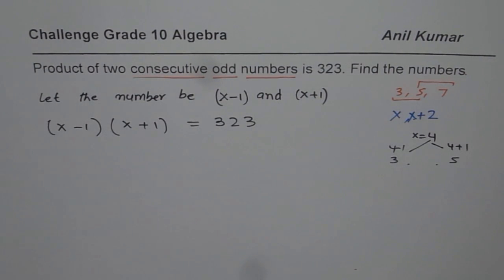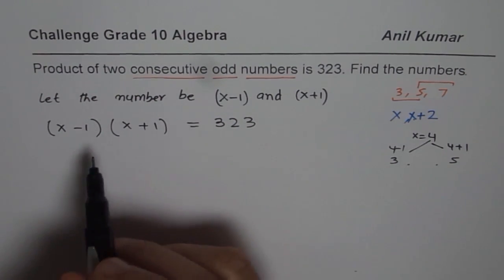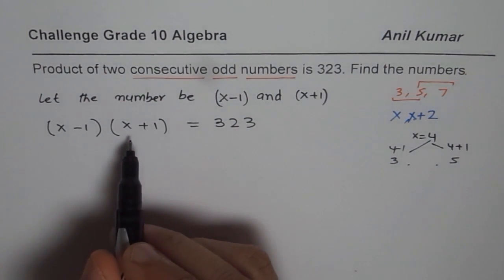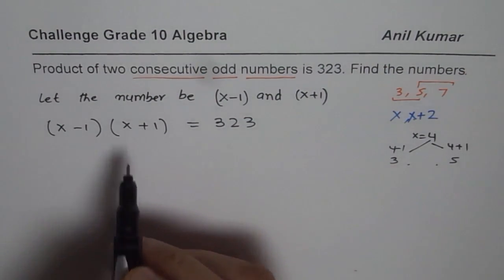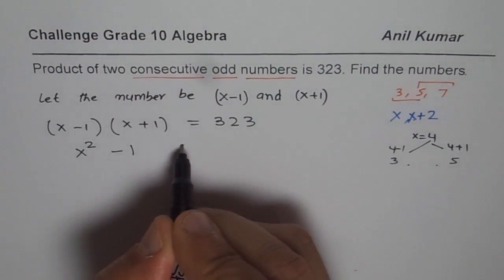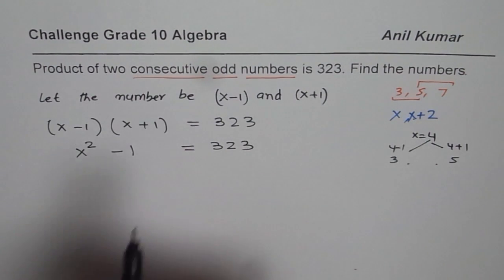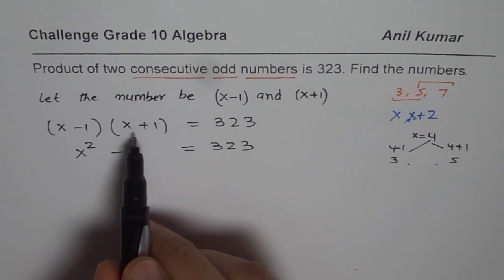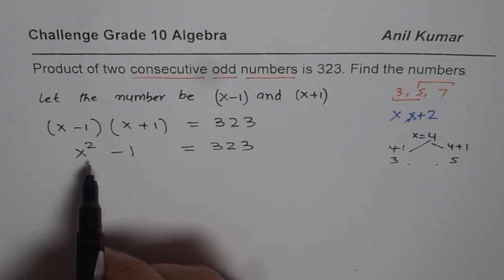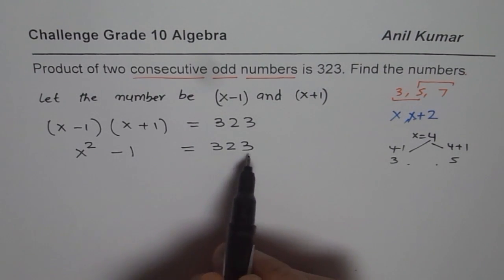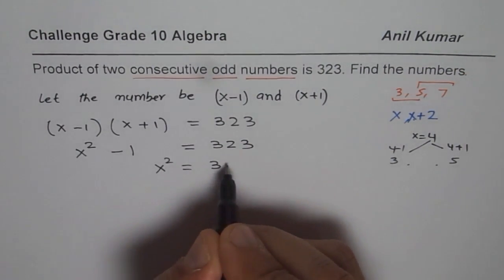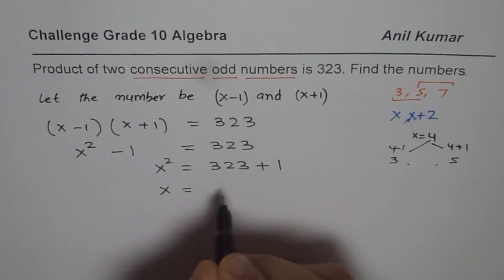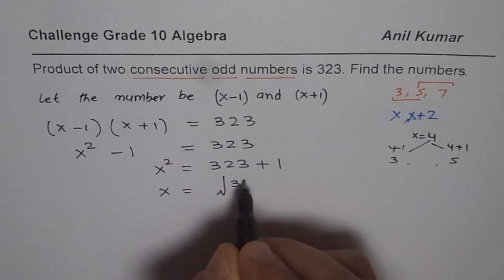That is kind of review of the equations which we learned so far. Now let's apply our factoring and multiplying techniques of polynomials. So when you multiply sum and difference what do you get? You will get x square minus 1 equals to 323. Some of you who have not done this kind of factoring can apply the distributive property. Now I can add 1 on both the sides. So I get x square equals to 323 plus 1 or I get x equals to square root of 324.